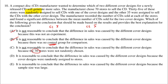Option D says it is reasonable to conclude the difference in sales was caused by the different cover designs because the cover designs were randomly assigned to stores. That's exactly right — that's our answer. Option E says it's reasonable because the sample size was large. No — sample size being large is never the primary indicator of whether we can show a cause-and-effect relationship. So the answer is D.